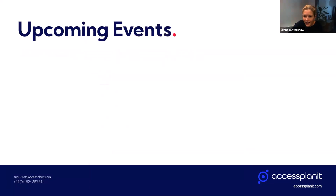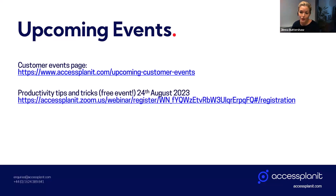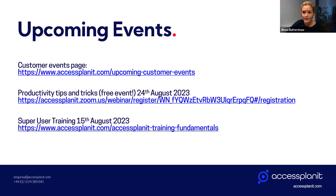Before the Q&A, here's a quick run through of upcoming events. We have a free productivity optimization webinar coming towards the end of August — that's on the 24th. We also have super user training on the 15th of August at £150 per person. Just a note: the Q3 product update will be on Thursday the 5th of October at the same time, 10 a.m. I'll stick all of these links into the chat now.